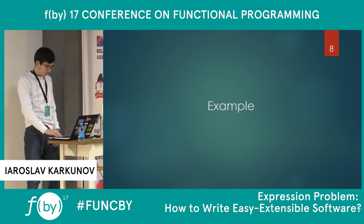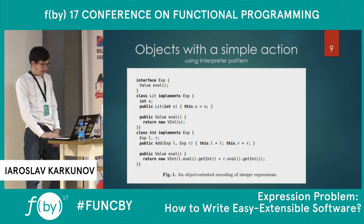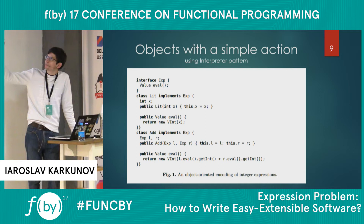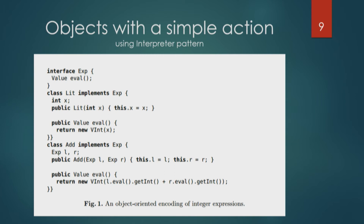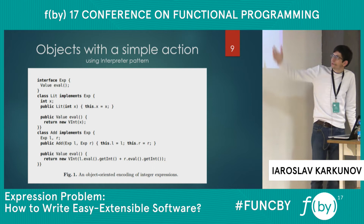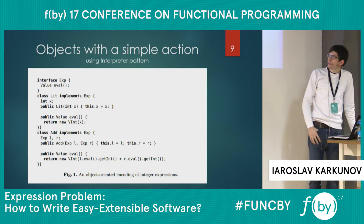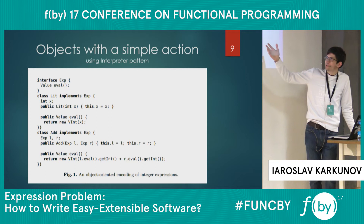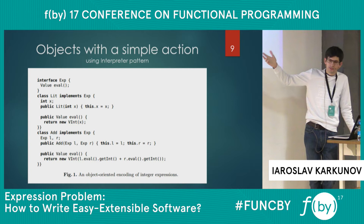Let's start with an example written in Java. Suppose we have a really simple problem. We have interface Expression which could be evaluated with an eval method, and also two classes — Lit and Add — which implement that interface. You can see that the Add class reuses two expressions, left and right expression, and represents addition. And Lit represents a literal integer, which is just an integer number. We also define two eval functions inside those classes, and that is the standard object-oriented approach.